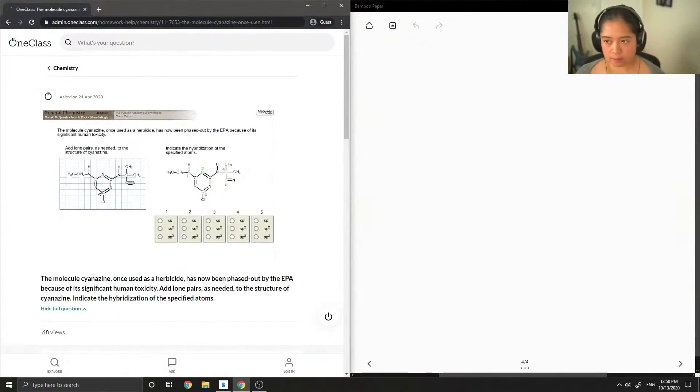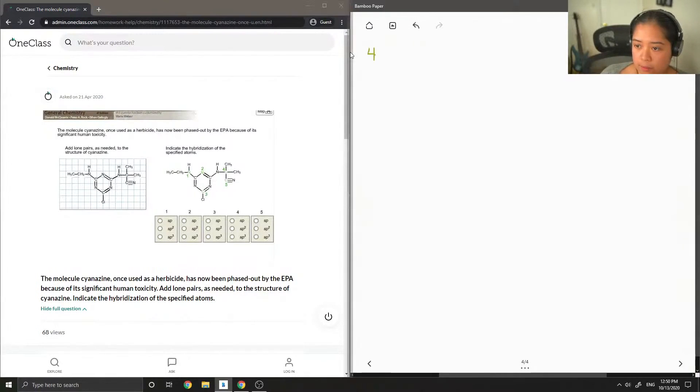Okay, so the next one. Now we are on the question: the molecule cyanazine, once used as a herbicide, has now been phased out by the EPA because of its significant human toxicity. Add lone pairs as needed to the structure of cyanazine, also indicate the hybridization of the specified atoms.